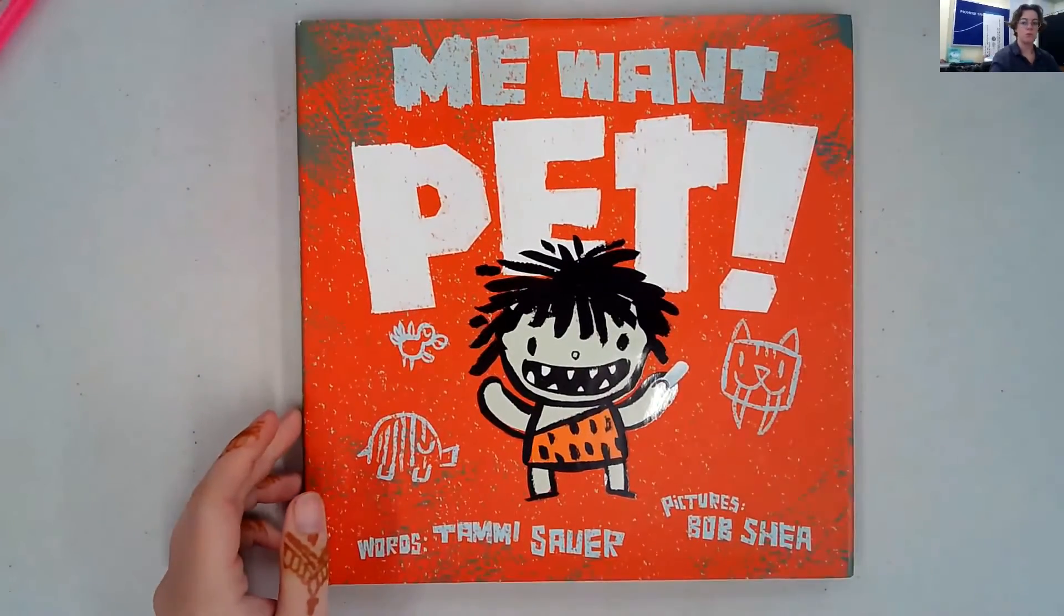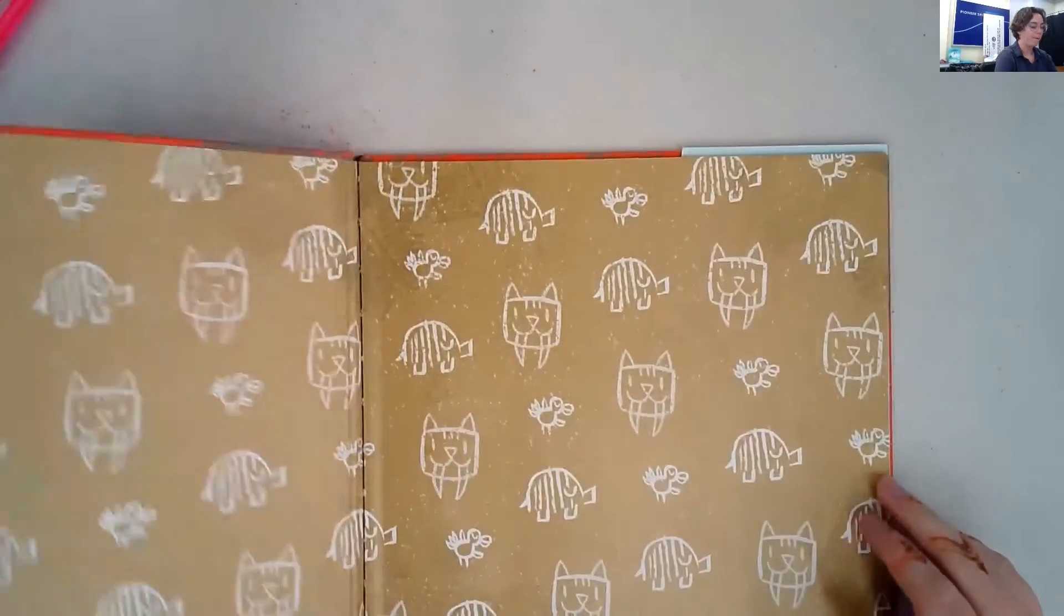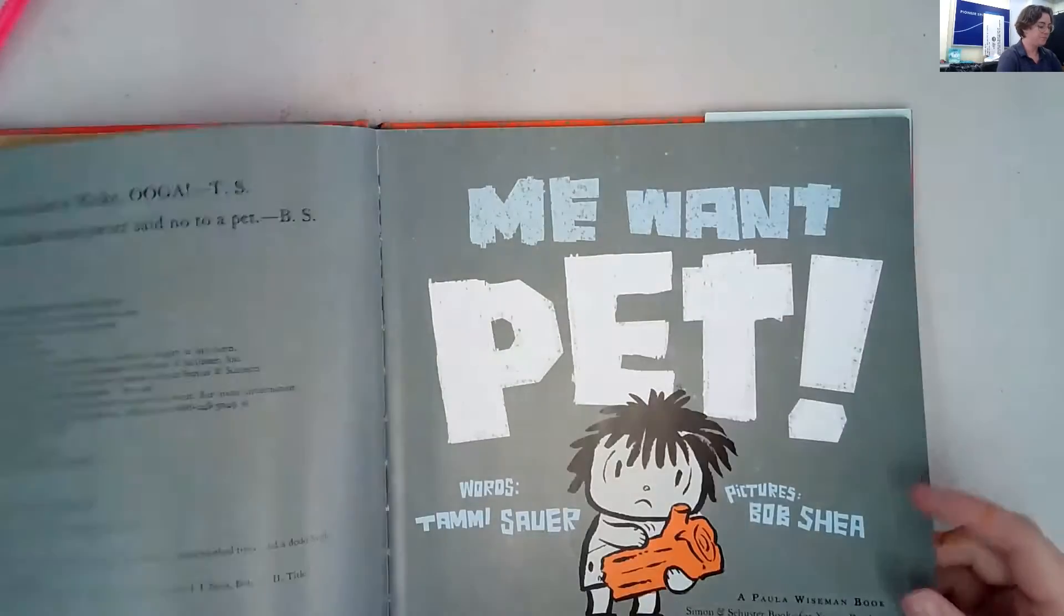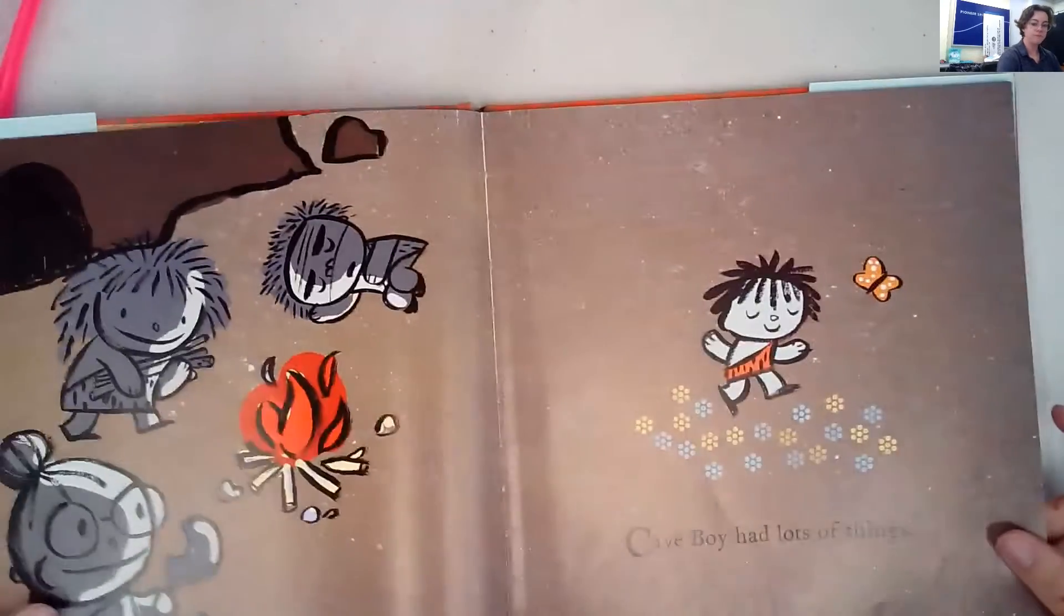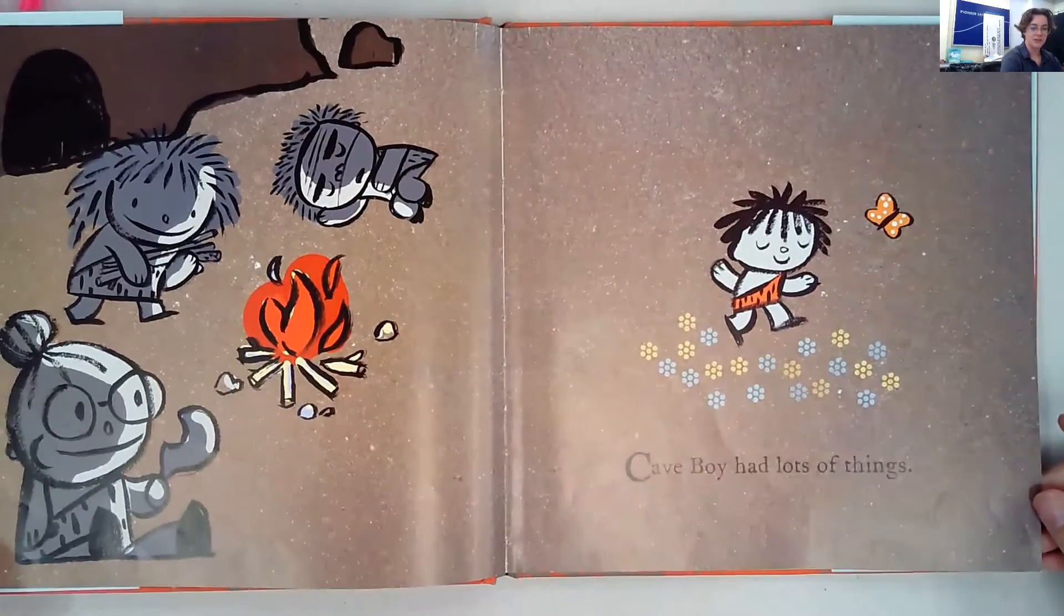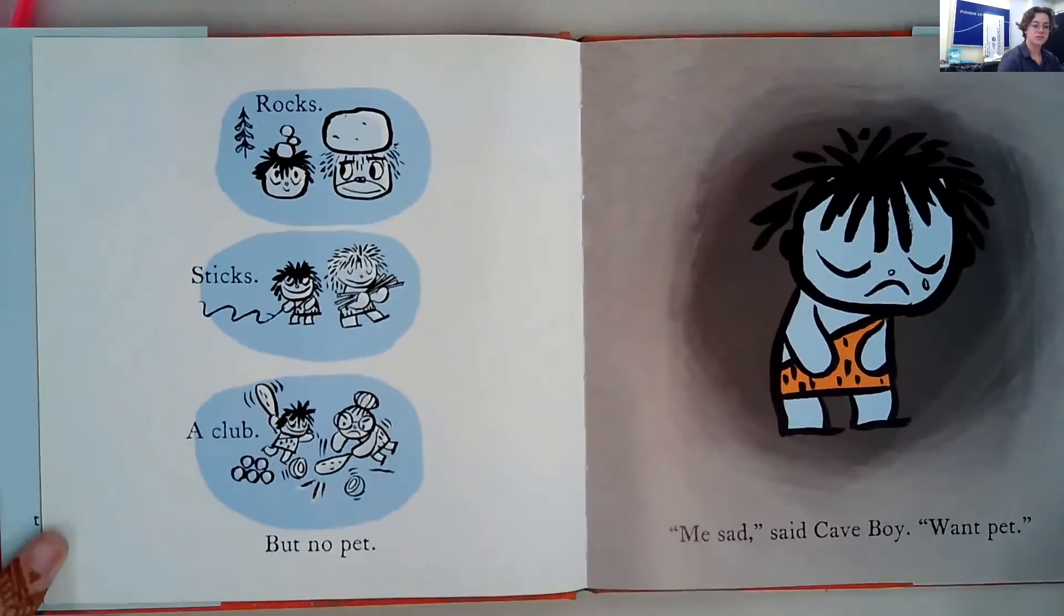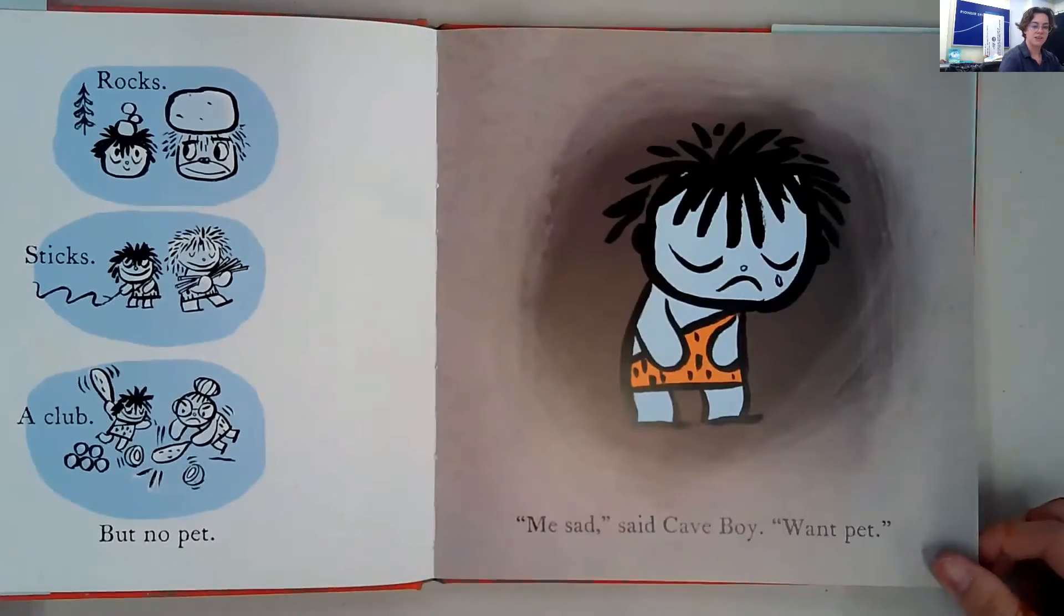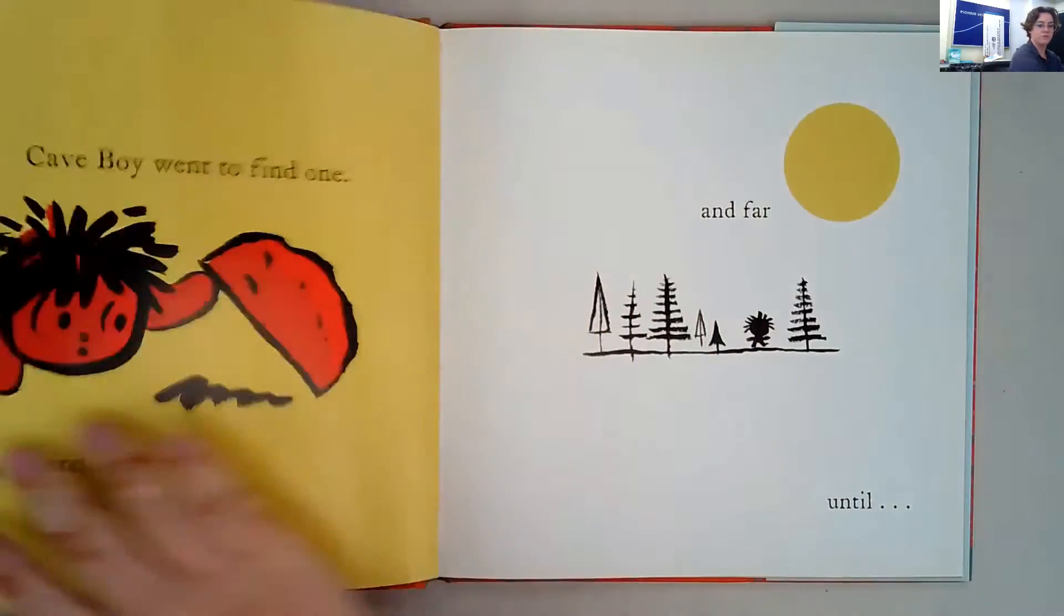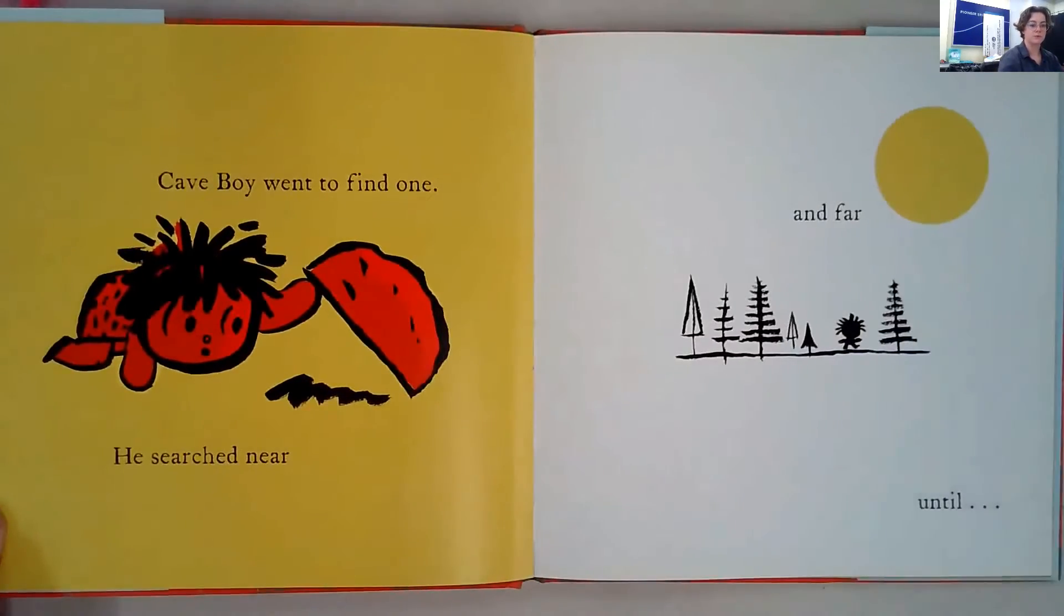Cave boy had lots of things: rocks, sticks, a club, but no pet. 'Me sad,' said cave boy. 'Want pet.'